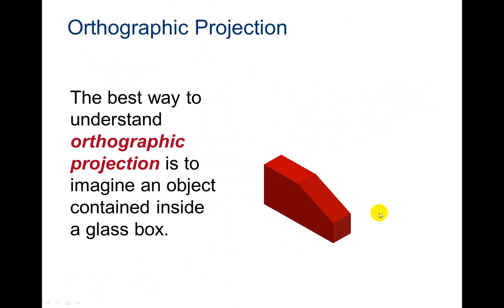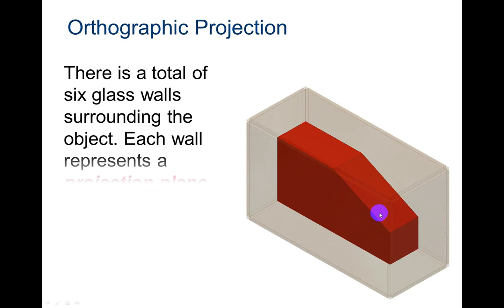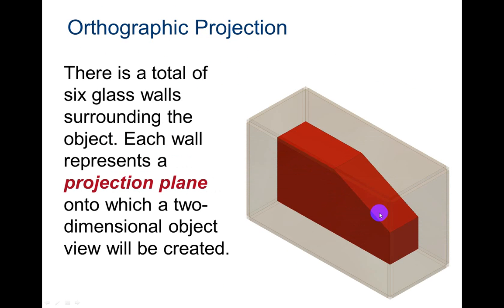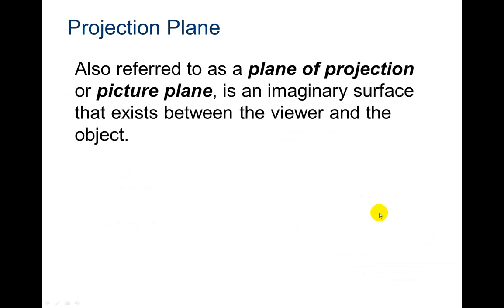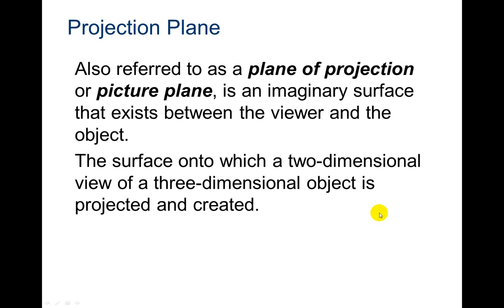So the best way to understand orthographic projection is to imagine an object contained inside of a glass box. Just like that cube that we just looked at with the die. There's a total of six glass walls surrounding the object. Each wall represents a projection plane onto which a two dimensional object view will be created. Also referred to as a plane of projection or picture plane. An imaginary surface that exists between the viewer and the object. The surface onto which a two dimensional view of three dimensional object is projected and created.